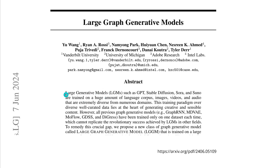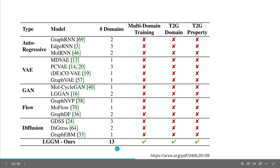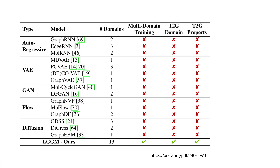They tell us that large generative models such as GPT, Stable Diffusion, and Sora, trained on a huge amount of language corpus, images, videos, and audios, were extremely diverse from numerous domains, while up until now all other models have been trained only on one dataset at a time. To remedy this crucial gap, the researchers proposed a new class of graph generative models - they call it LGGM. Comparing it with other models and training datasets, you see the number of domains was rather limited. Now with this new one we have 13 different domains, so multi-domain training sets in, and text-to-graph is now also possible.